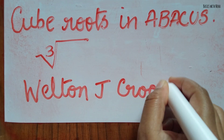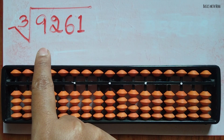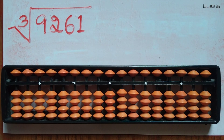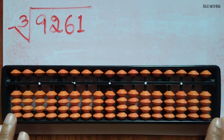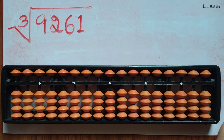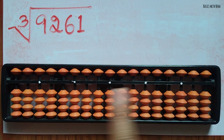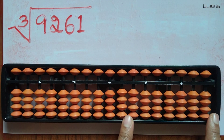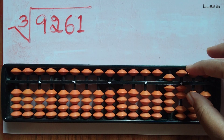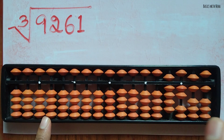We are going to follow Wilton J. Crook's method to solve cube roots. I'm going to show you a number which Wilton J. Crook himself demonstrated: 9261. We are going to first divide the tool. It is better if you have a 17-rod abacus tool; with a 13-rod it is very difficult. This tool should be divided into three parts: four rods for the root number, six rods for the square number, and seven rods for the cube number.